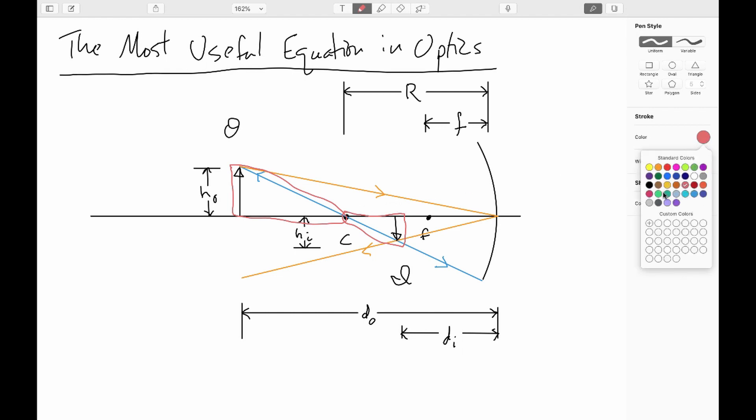The other one that I would like to look at, I'll note here in sort of a greenish color, is this triangle here, is proportional, is similar to this triangle here. These two angles are the same by the law of reflection. And these are both right angles here and here. So all the angles are the same. So those are also similar triangles.